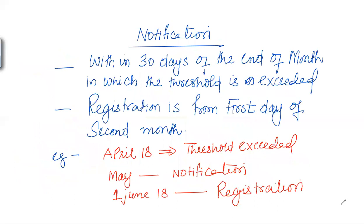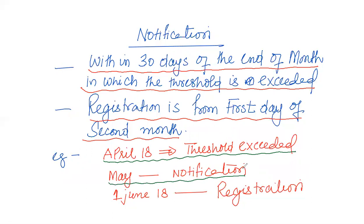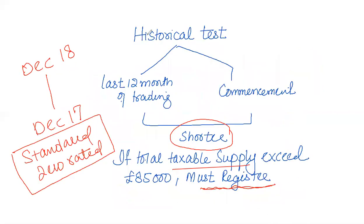If the threshold is exceeded — for example in December — you must notify HMRC within 30 days of the end of the month in which the threshold is exceeded. Registration is then mandatory from the first day of the second month after the notification period. For example, if the threshold is met in April, the notification period ends 30th May, and registration is compulsory from 1st June, from which point VAT must be charged to customers.